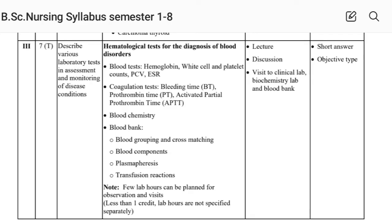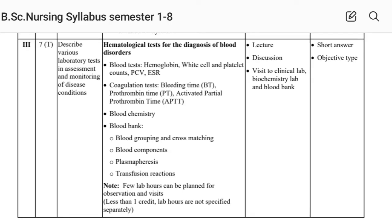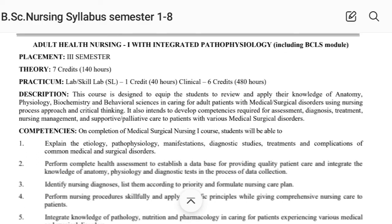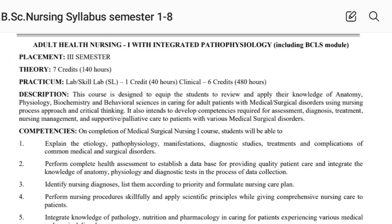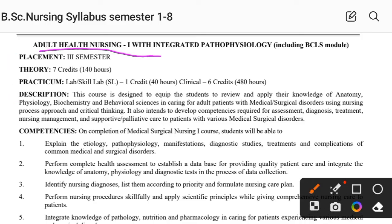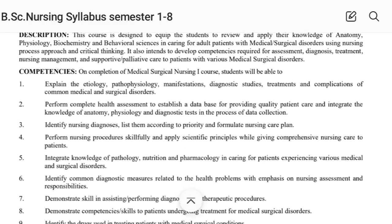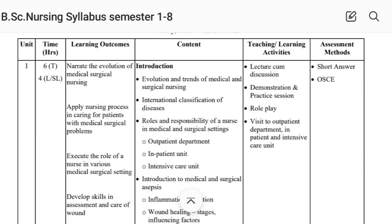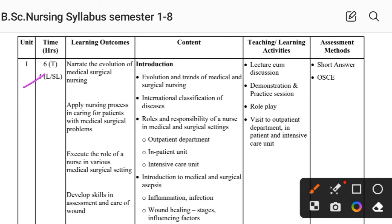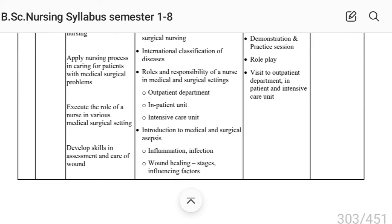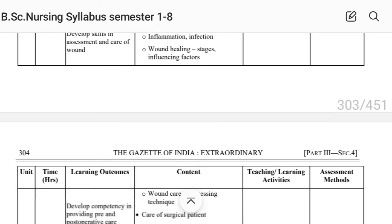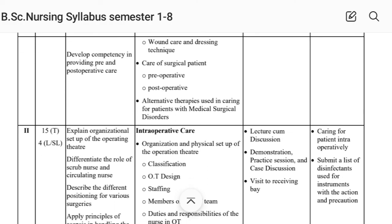Next is Adult Health Nursing First, also known as Medical Surgical Nursing First. Its name has been modified to Adult Health Nursing First with Integrated Pathophysiology including PCLS module, placed in Semester Third. Unit First covers introduction, including pre-operative and intra-operative care.